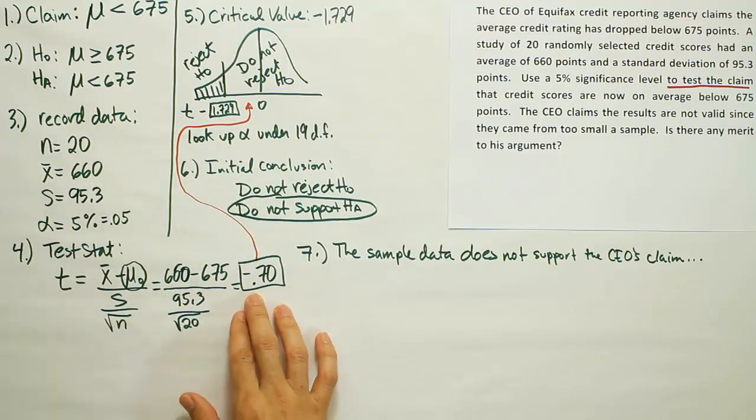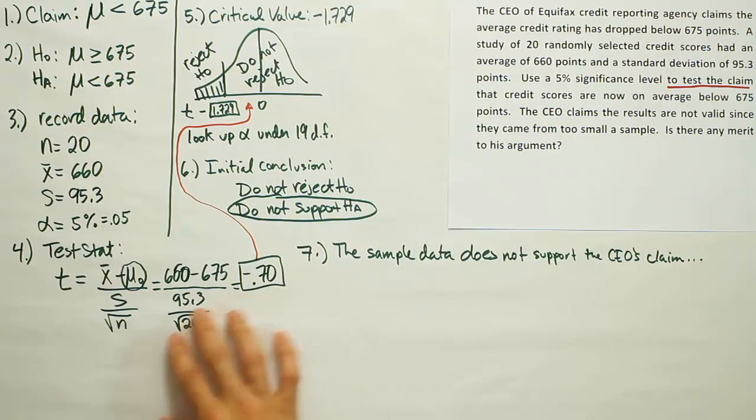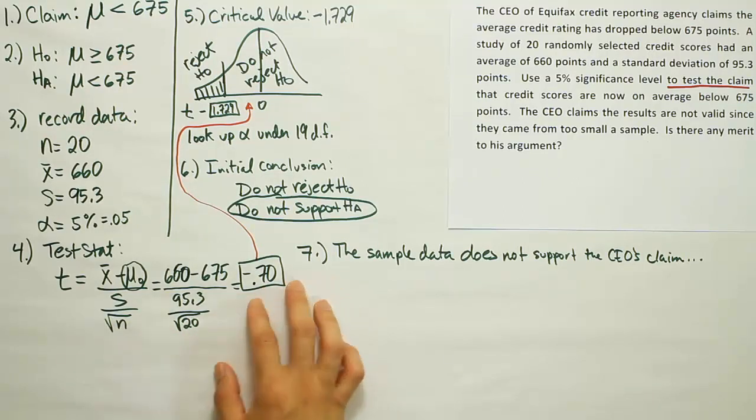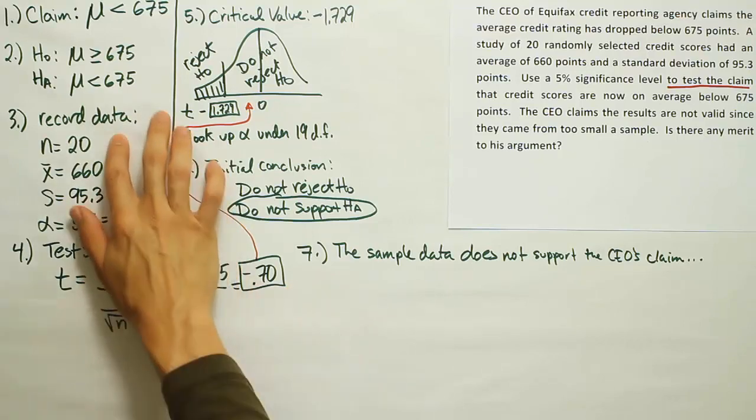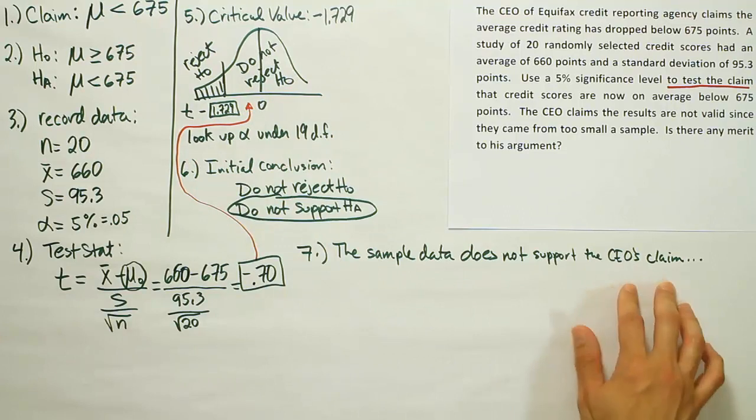But still, this test stat is very close to 1. It's not close enough to that rejection region. If it had been something like 1.69, negative 1.69, we might have said, well, gee, under a z-test scenario, we would have been able to reject H0. But either way, in this particular scenario, the t-test does not allow us to reject H0. So, we cannot support the CEO's claim.